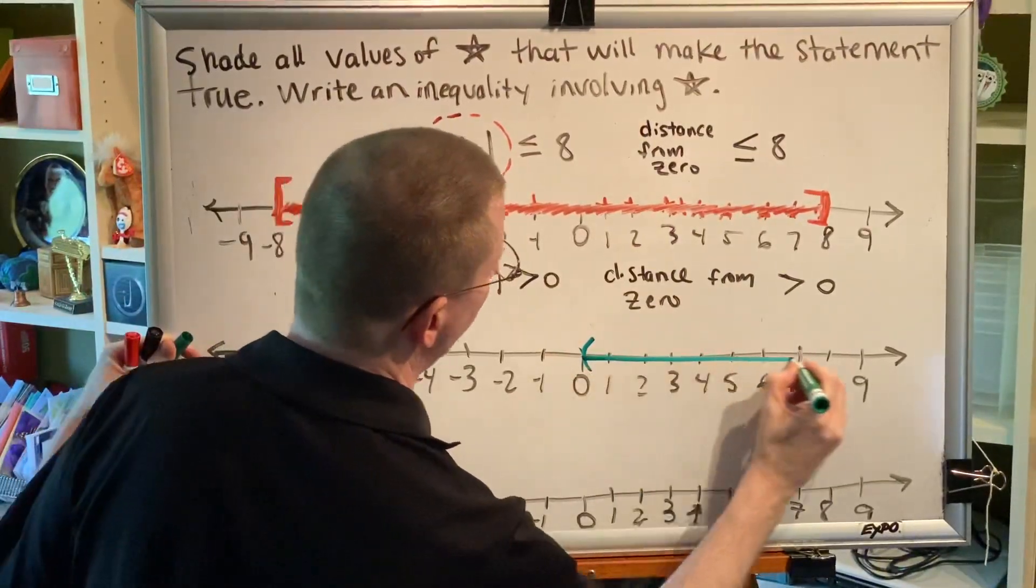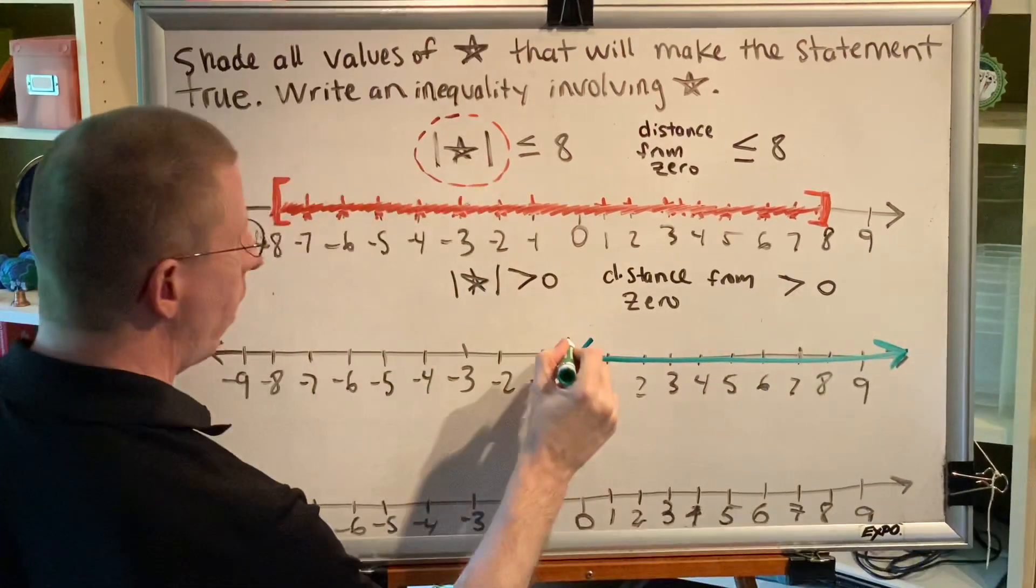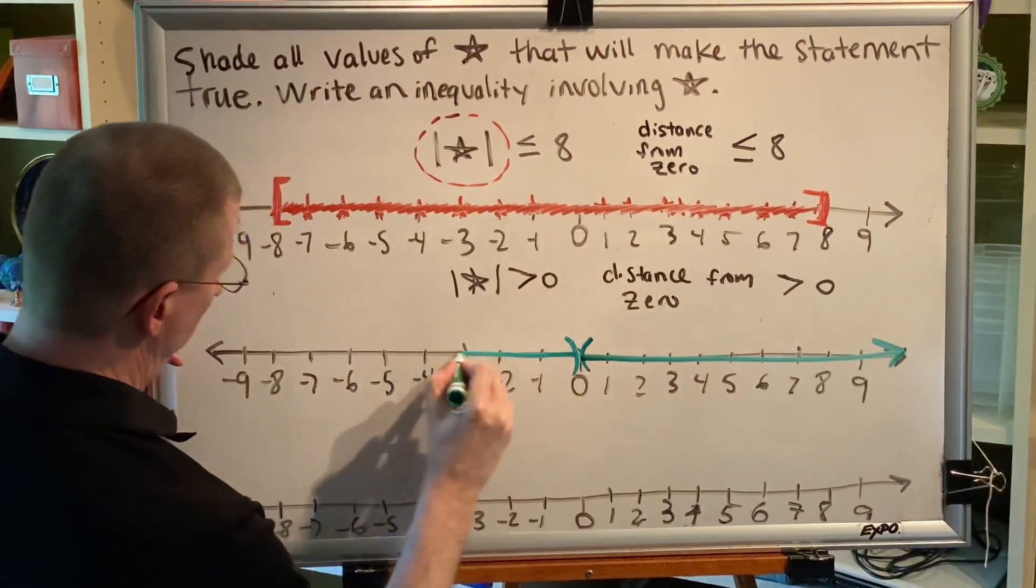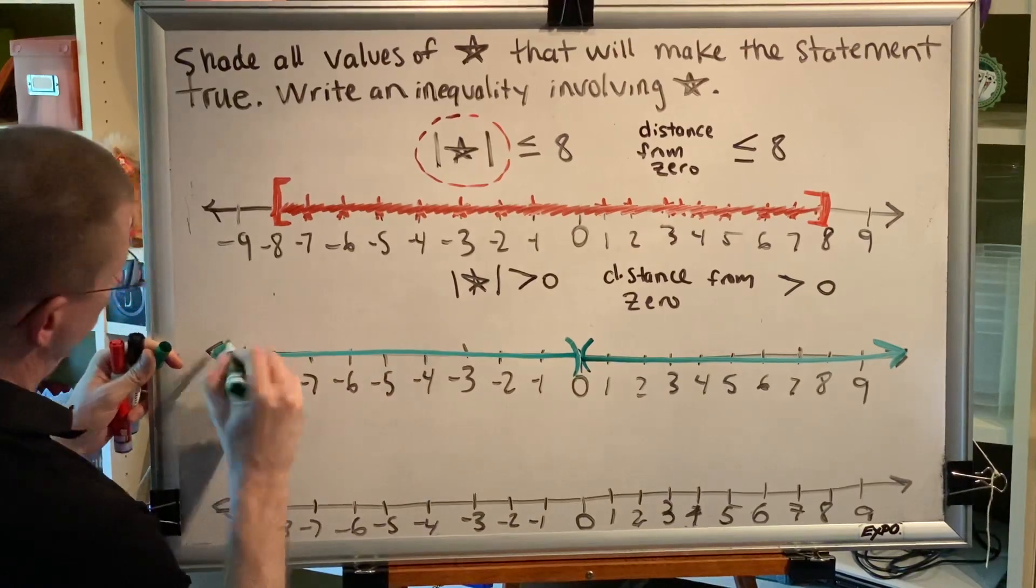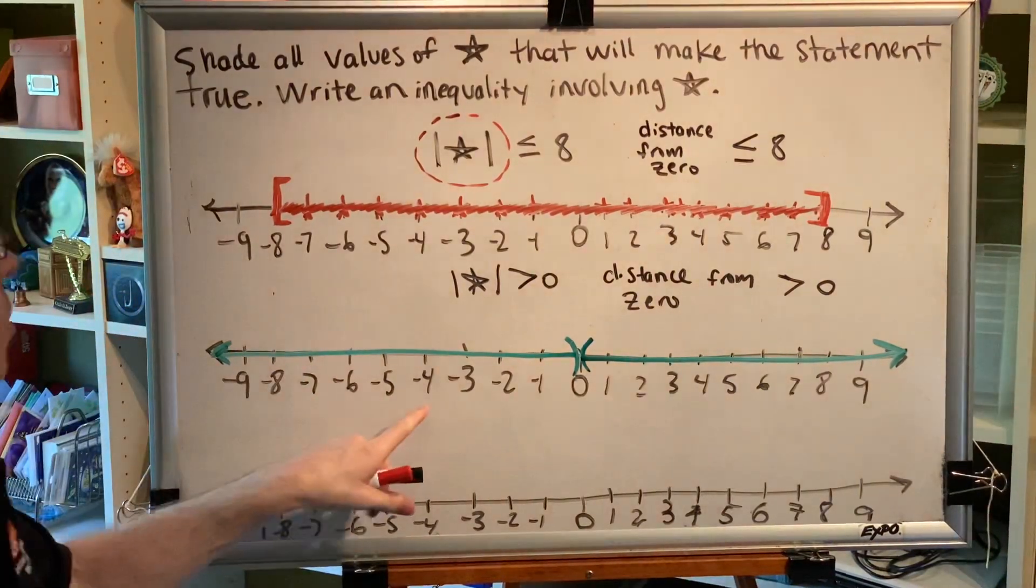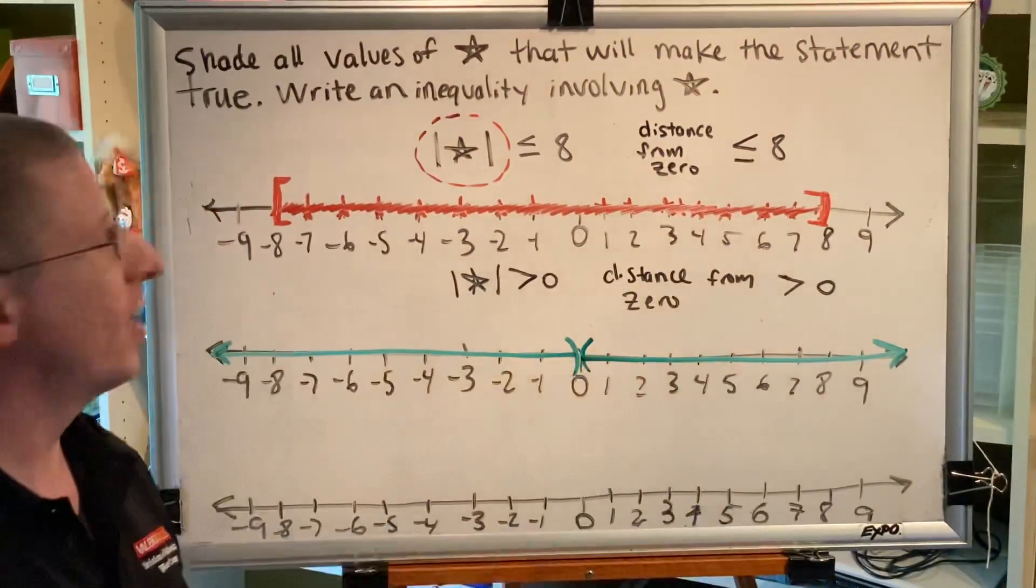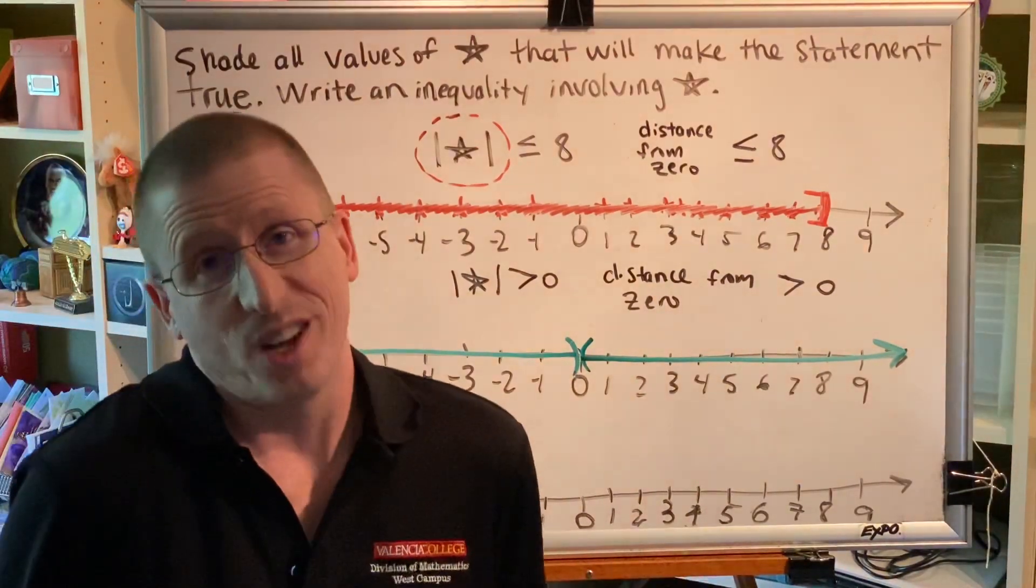So when we shade this on our number line, this is what it would look like. In fact, every number in the world is more than 0 steps away from 0, except 0 itself.